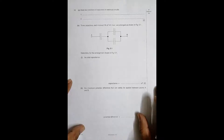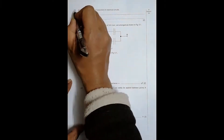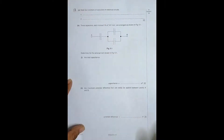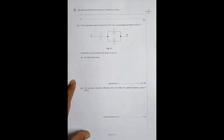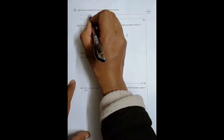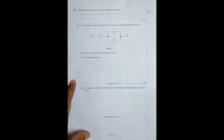Hello folks, this is 2010 May June paper 43 concerned with the chapter of capacitors. The first question says: state two functions of capacitors in electric circuits. The first function is that it stores energy, and the second function is that it has the ability to block DC. We can also use it to smooth and rectify DC obtained from AC, and to construct oscillator circuits, which are an integral part of inverters as well as clocks.